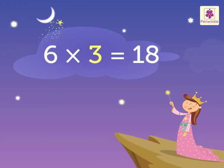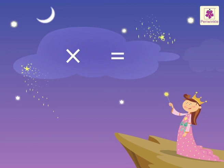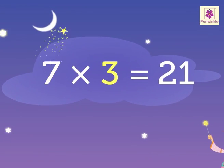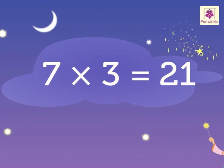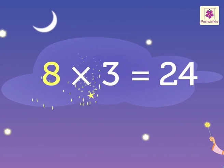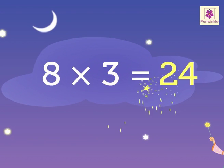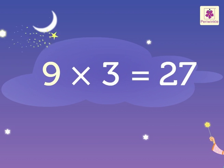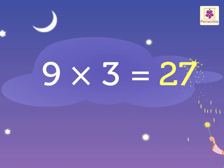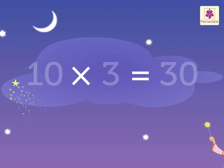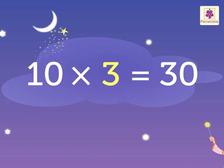6's 3's are 18, 7's 3's are 21, 8's 3's are 24, 9's 3's are 27, 10's 3's are 13.